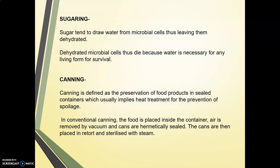Canning is defined as the preservation of food products in sealed containers, which usually implies heat treatment for the prevention of spoilage. The principle of canning is based on the fact that perishable fruits and vegetables are spoiled by microorganisms, and the application of heat kills those microorganisms or inactivates their enzymes. In conventional canning, food is placed inside a container, air is removed by vacuum, the cans are hermetically sealed, and then placed in a retort and sterilized with steam. Nicholas Appert is known as the father of canning.